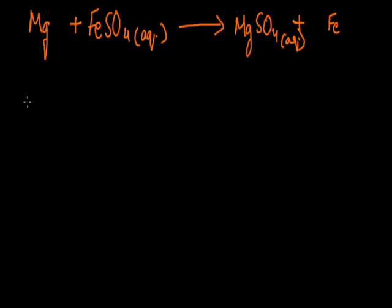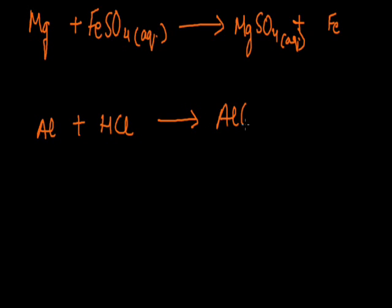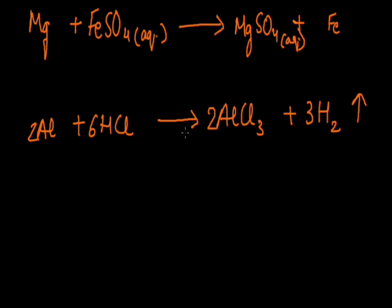Metals can also displace hydrogen in reactions with acids. Metals at the top of the reactivity series displace hydrogen. For example, aluminium on reaction with HCl (hydrochloric acid) forms AlCl3 plus H2. Aluminium displaces hydrogen and hydrogen gas is released. But the same reaction will not happen with copper, and no hydrogen gas will be produced because copper comes below hydrogen in the reactivity series.